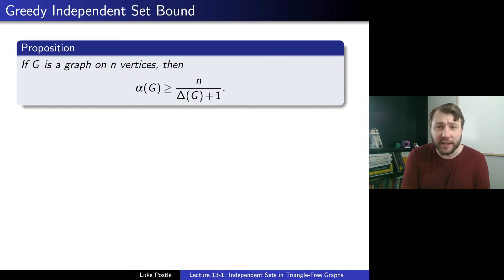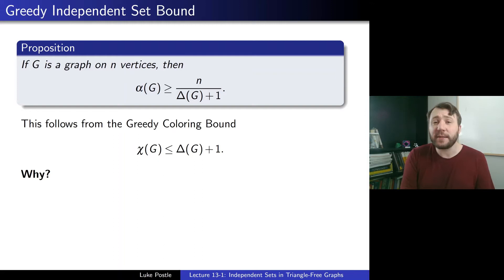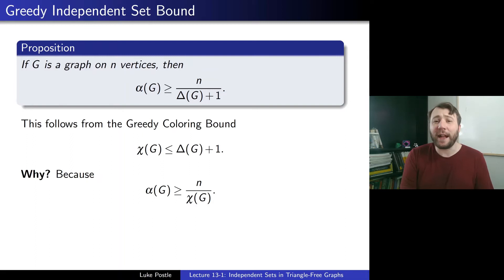Why is that? It follows from the greedy coloring bound that chi(G), the chromatic number, is at most delta(G) plus 1, which follows from greedily coloring the vertices in any order. This implies the independent set bound because alpha(G) is at least n over chi(G). If we have a chi(G)-coloring, the average color class has size n over chi(G), so there's at least one of that size, and every color class is an independent set.